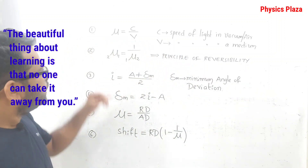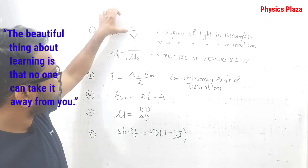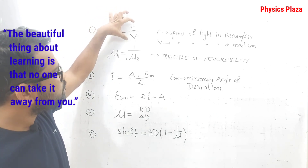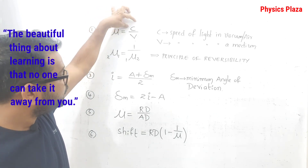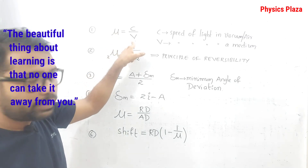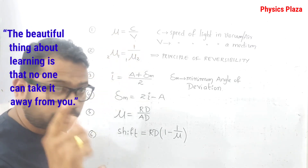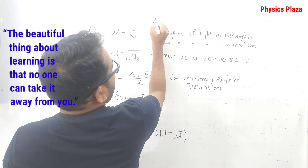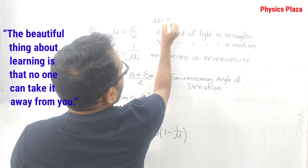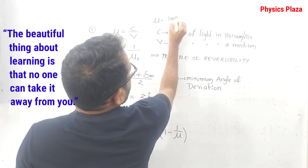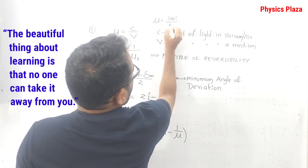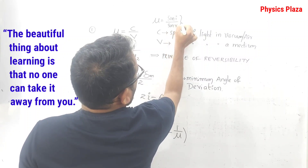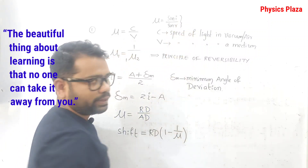The first formula is: refractive index μ is equal to c by v, that is the speed of light in vacuum to the speed of light in a medium. One more important formula is μ is equal to sin i by sin r, based on Snell's law.